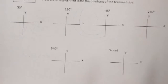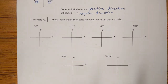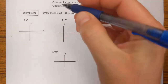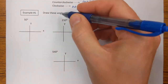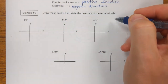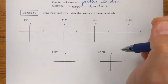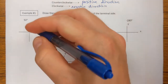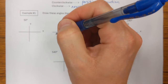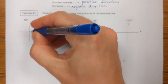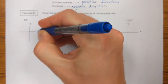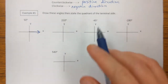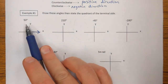Let's look at our examples. I'm going to do the first one, and then I'd encourage you to get out a scrap sheet of paper and try the others. Draw these angles, then state the quadrant of the terminal side. Let's start with 50 degrees. I'm always going to start by drawing my initial side along the positive x-axis, then think about 50 degrees.